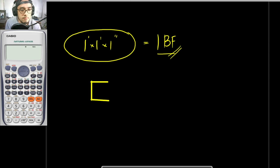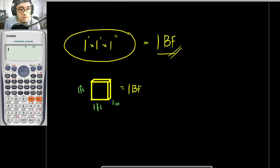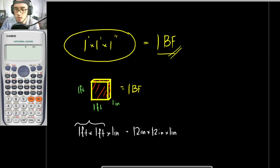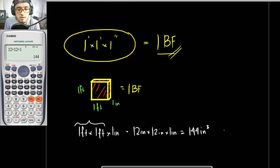So this is the lumber: one foot by one foot by one inch equals one board foot. If we convert these dimensions into inches to get the volume in cubic inches, that would be 12 inches by 12 inches by 1 inch. Solving for this volume — 12 times 12 times 1 — that is 144 cubic inches. So for every board foot, there are 144 cubic inches.